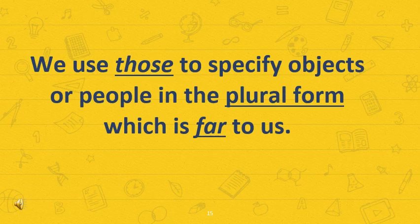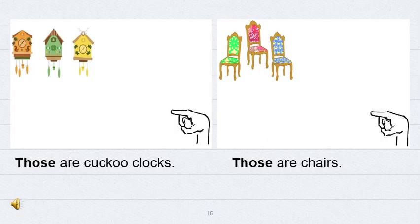Now let's talk about 'those'. We use 'those' to specify objects or people in the plural form that is really far from us. For example, you can see the cuckoo clock. Those are cuckoo clocks — that's why I have used 'those' because it's really far from my pointing arrow. Let's talk about another one: if you can see the wooden chairs, the pointing arrow is really far. That's why we use 'those are chairs'.